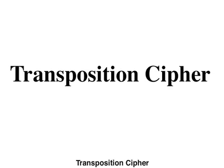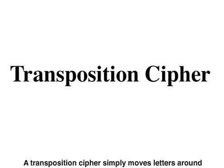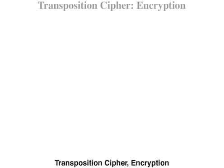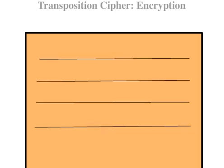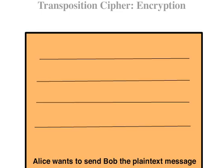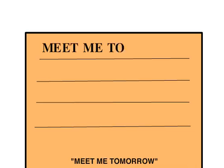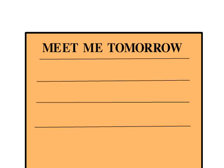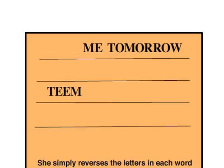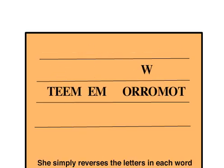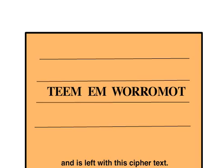Transposition cipher. A transposition cipher simply moves letters around rather than replacing them with something else. Transposition cipher encryption: Alice wants to send Bob a plain text message, 'meet me tomorrow.' She simply reverses the letters in each word and is left with this cipher text.